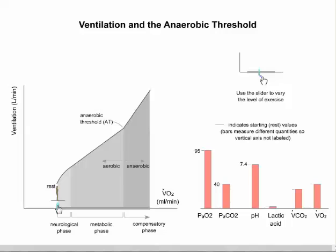There's more oxygen volume than there is carbon dioxide volume. And as the guy starts to exercise, right here he's crossing into the aerobic threshold. You'll notice that the pH is still around 7.4, but both the carbon dioxide and the oxygen values have increased.